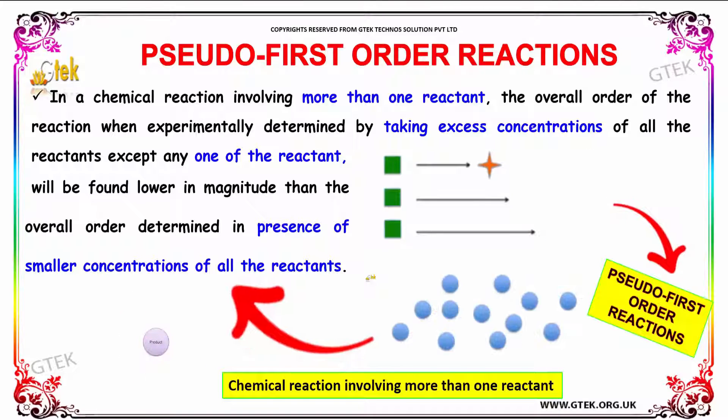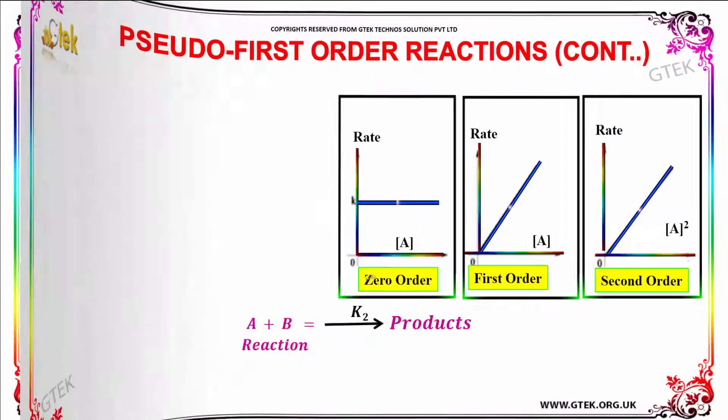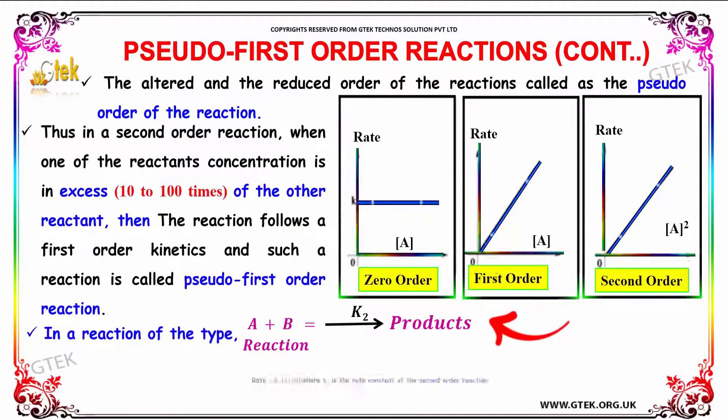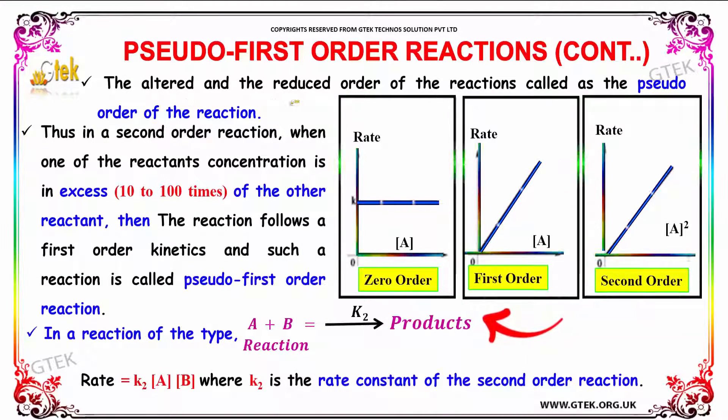The altered and the reduced order of the reaction is called as the pseudo order of the reaction. Thus in a second order reaction, when one of the reactants concentration is in excess 10 to 100 times of the other reactant, then the reaction follows a first-order kinetics and such a reaction is called as pseudo first-order reaction.